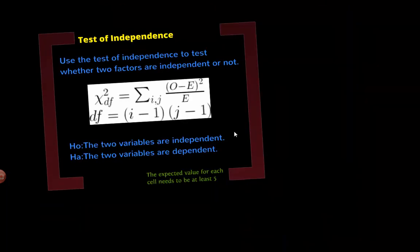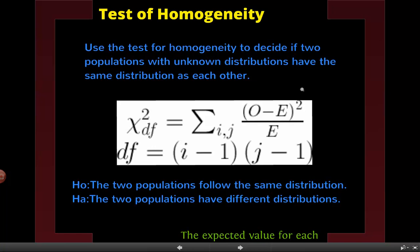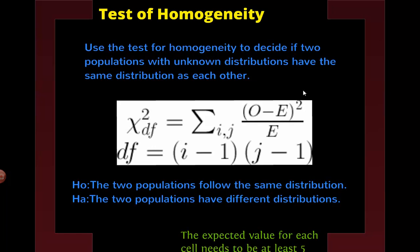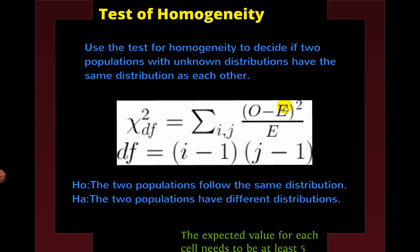The next one is homogeneity. We're going to have two populations with unknown distributions, and we want to know if they are the same. Again, we're going to have a list of columns, and we're going to have observed minus expected, squared over expected — it looks very familiar. The degrees of freedom are number of columns minus 1 times number of rows minus 1. The null hypothesis is that the two populations follow the same distribution; the alternative is that they do not. The expected value has to be at least 5 in every cell.